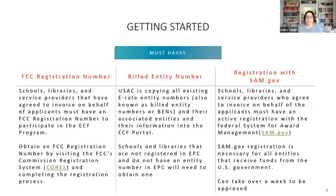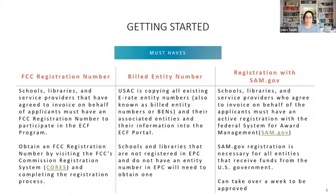If you already have information in the E-Rate Productivity Portal, it will be imported and rolled over into the ECF portal. Registration with SAM.gov enables you to receive funds once applications are approved. It can take over a week to get approved, so while preparing your application I would suggest filling out that registration so it's ready to go.